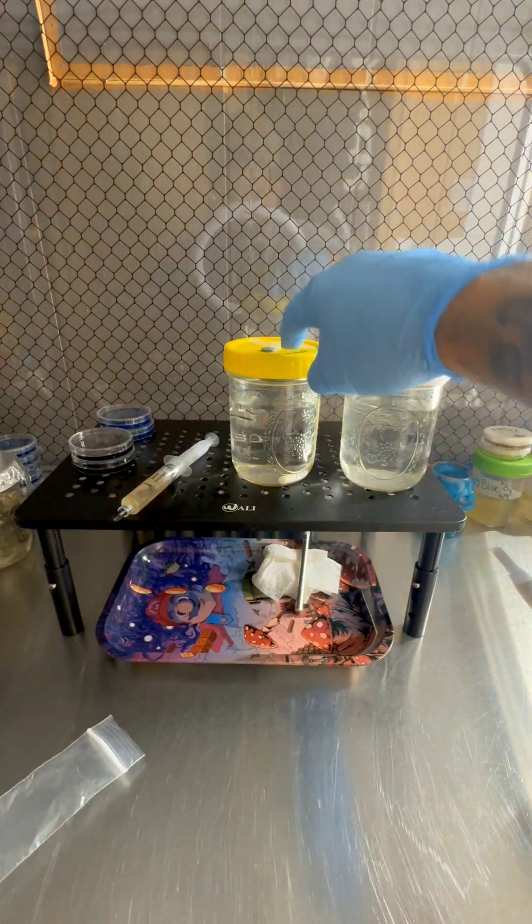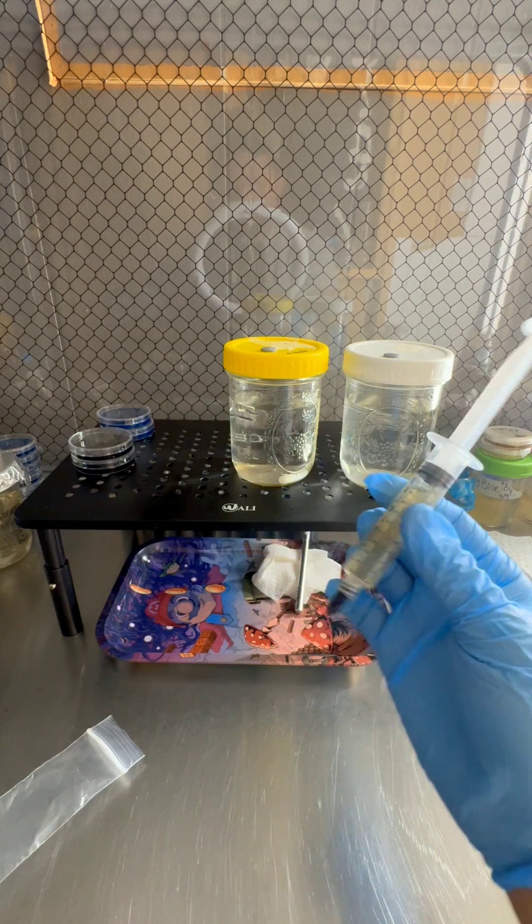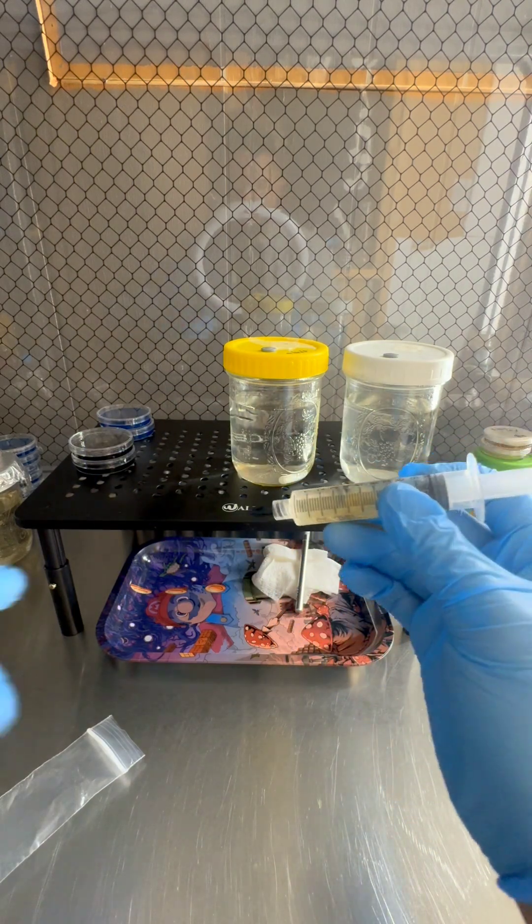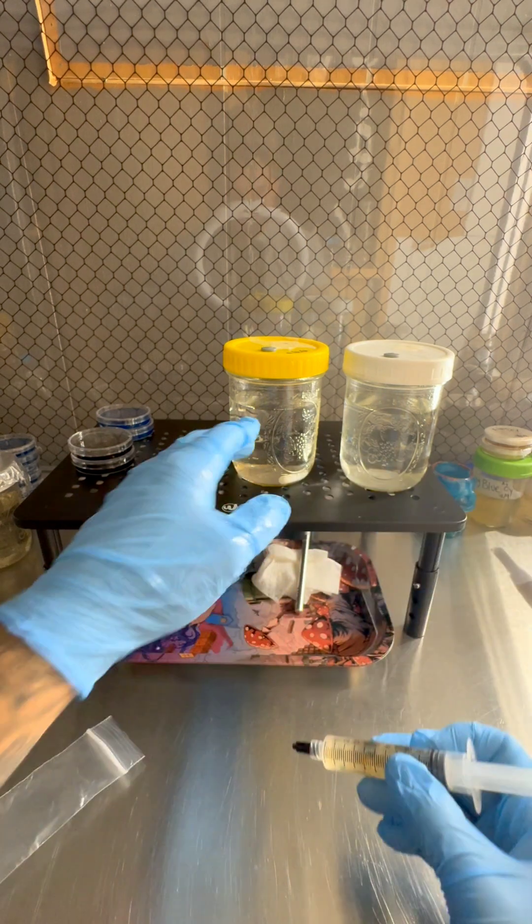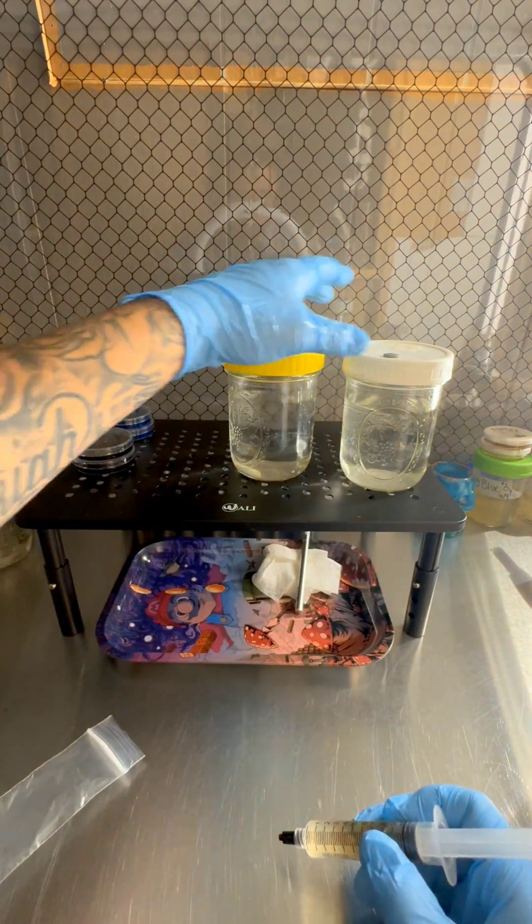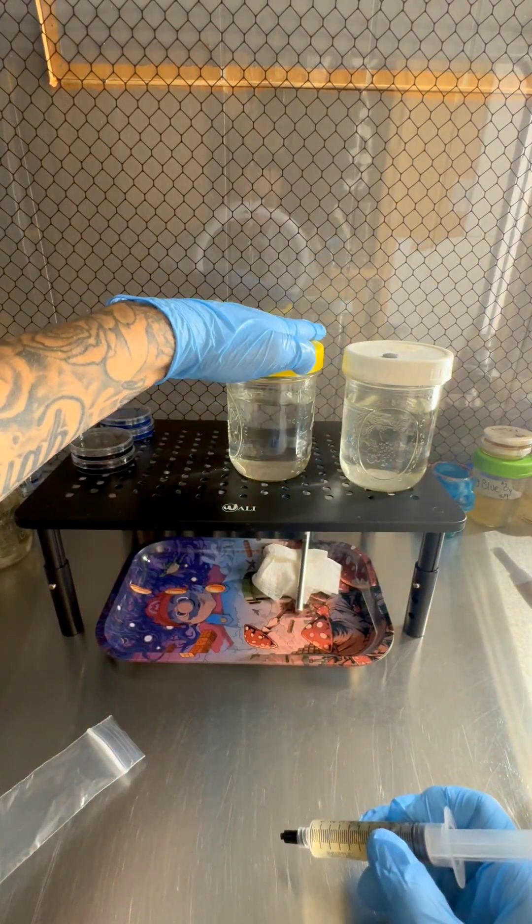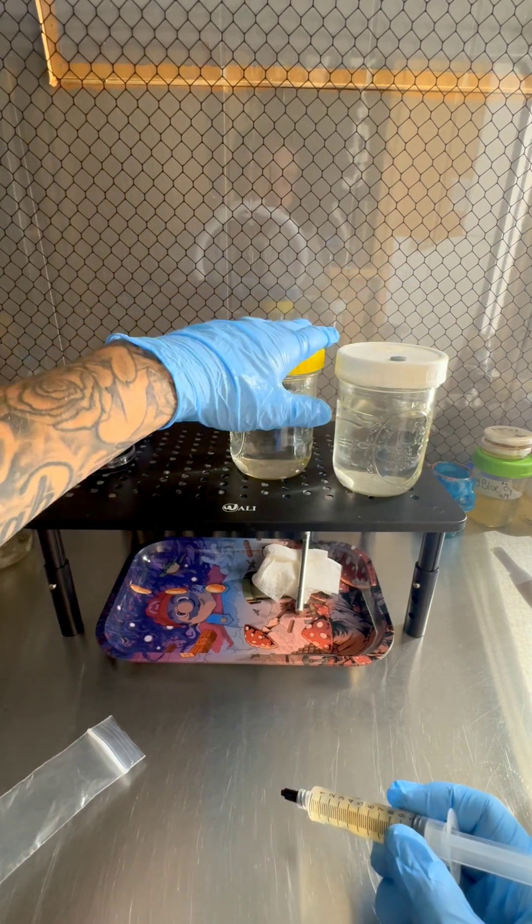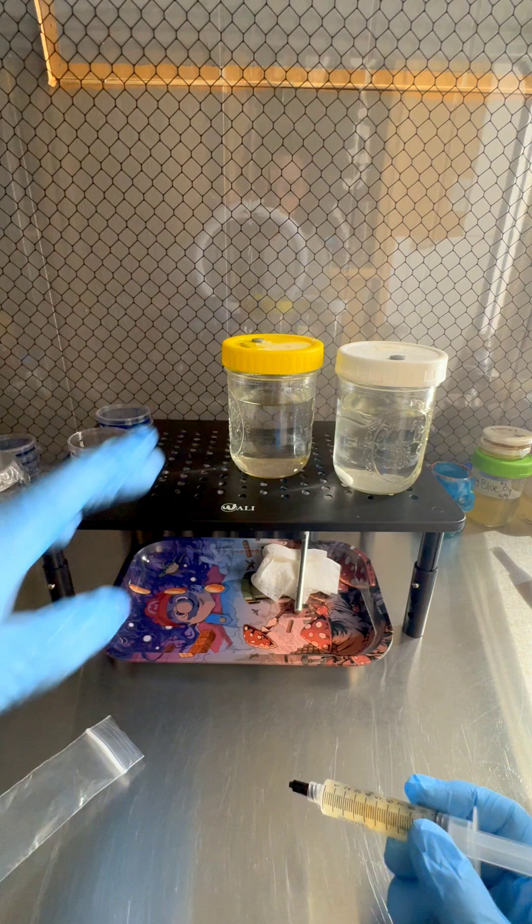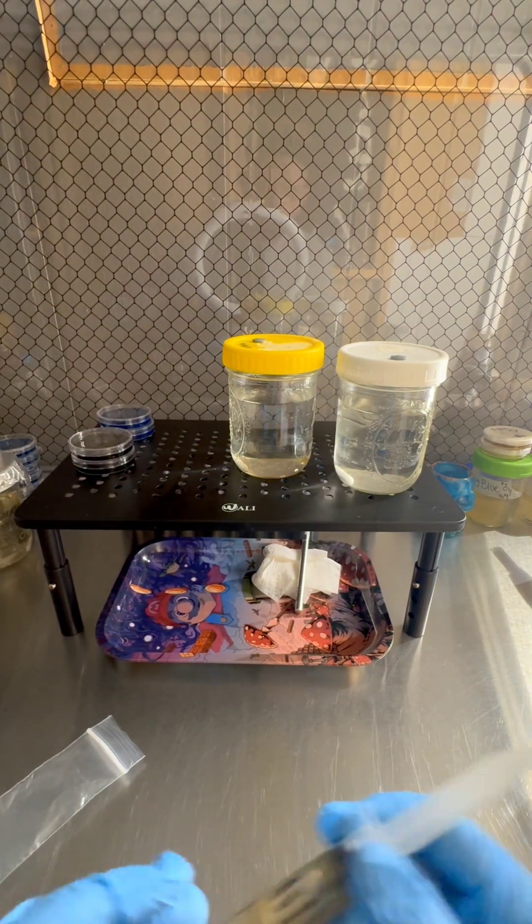So we're gonna inoculate both of these jars with this LC. We only need a little bit, so I'll probably use two cc's per jar. And that's gonna turn these into 300 milliliters of liquid culture and another 300 milliliters of liquid culture. So that's a lot. You can actually get a lot of syringes out of that, which is what we want.